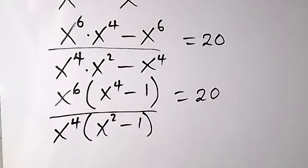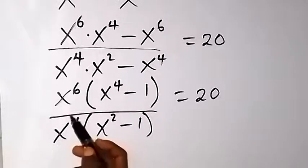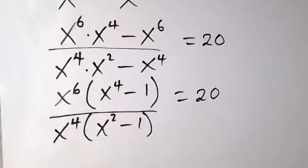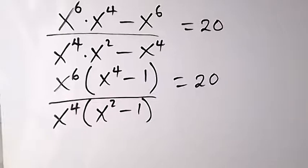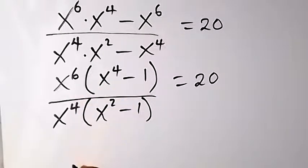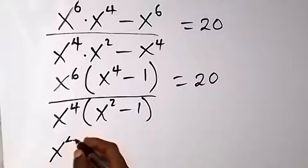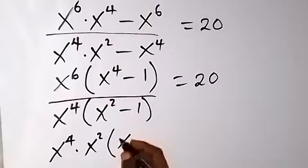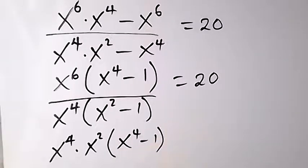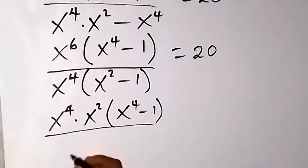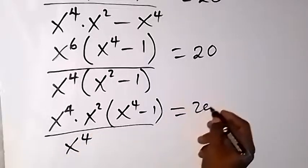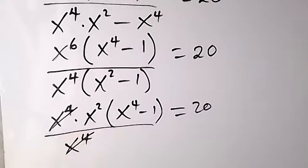From there we can eliminate x^4 by factoring it out of x^6 in the numerator, writing x^6 as x^4 times x^2. So the numerator becomes x^4 times x^2 times (x^4 - 1), divided by x^4 times (x^2 - 1). The x^4 cancels.